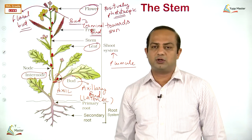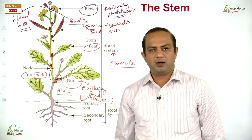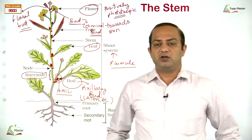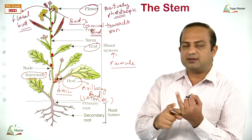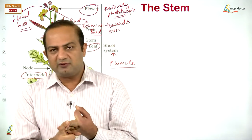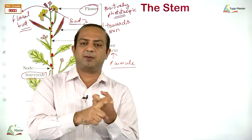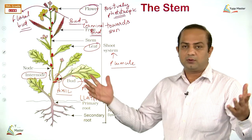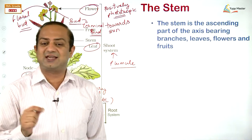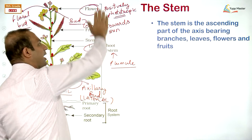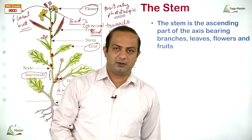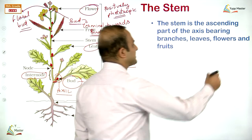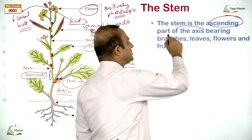To summarize what we have seen on the shoot system: leaves arise at nodes, branches develop, flowers may mature into fruits, and buds are present — terminal bud at the tip and axillary bud in the axil. The stem is the ascending part of the axis bearing branches, leaves, flowers, and fruits. Ascending means growing upwards.